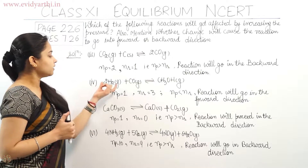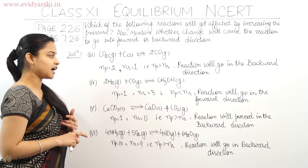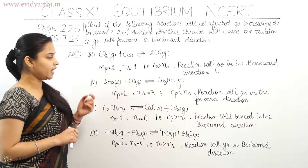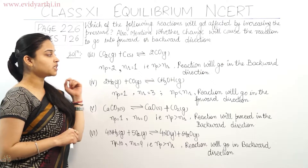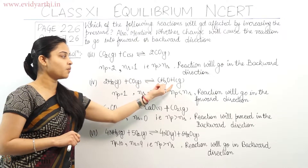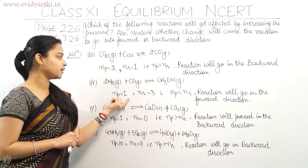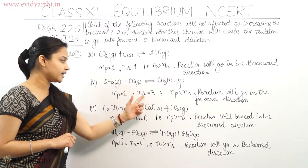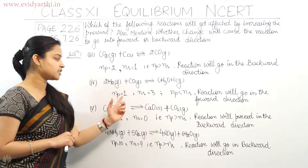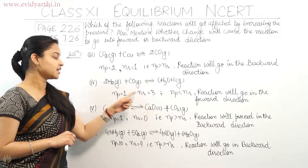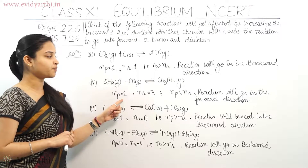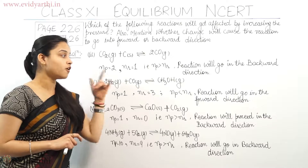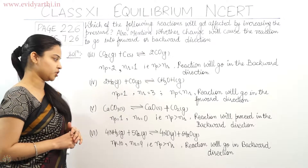Reaction 4: 2H₂(g) + CO(g) in equilibrium with CH₃OH(g). The number of moles in the product is 1, so Np = 1. Nr = 2 + 1 = 3. Nr is greater than Np, meaning the number of moles in the reactant case is greater than in the product case. So with increased pressure, the reaction will go in the forward direction.